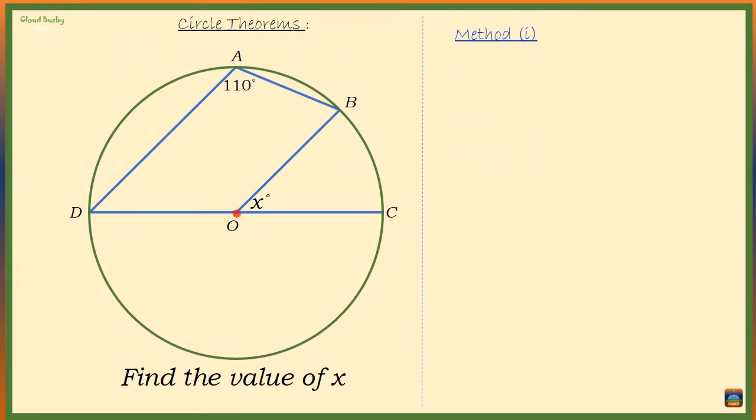O is the center of a circle. We want to find the value of the angle marked x at the center of a circle. We are given angle A which is on the circumference of the circle. Angle A is equal to 110 degrees. Using the circle theorems, let's consider the circle theorem that involves the center of the circle.